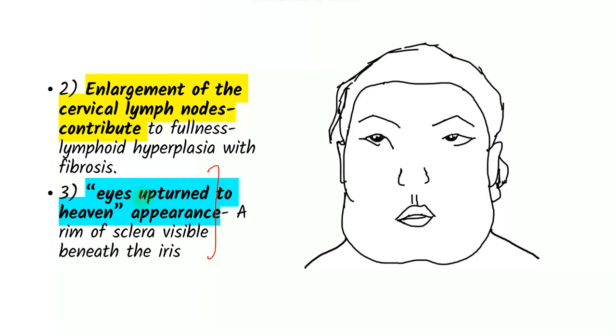So the second thing that you would see here is something called the eyes upturned to heaven appearance. If you look at this diagram, you see that the person appears to be looking upward. Why this happens is because of the involvement of the inferior and the lateral orbital rims. This causes the eyeball to tilt upward and retract the lower lid. So the eyeball turns upwards, retracting the lower lid, causing a rim of the sclera to be visible. So because of the visibility of within of the sclera, the eyes appear to be turned towards heaven. So this is the eyes upturned to heaven appearance. The third thing you see is enlargement of cervical lymph nodes, mostly the submandibular lymph nodes, and this contributes to fullness of the face.